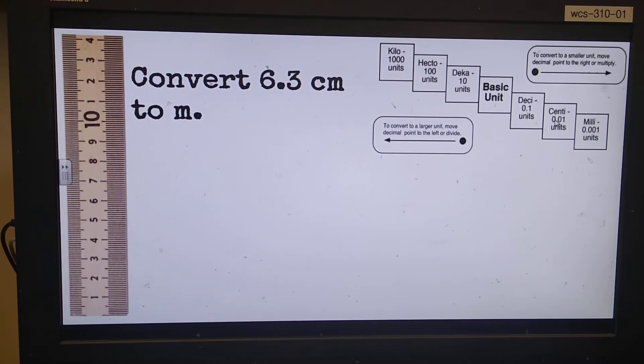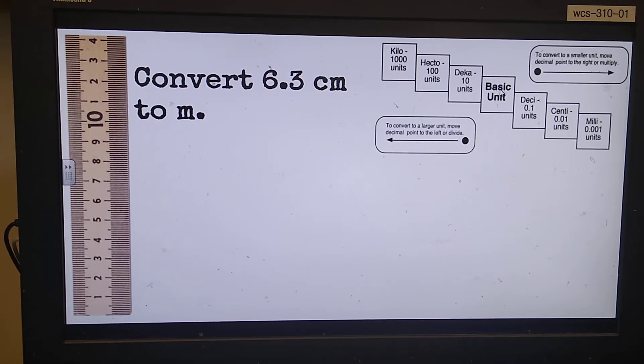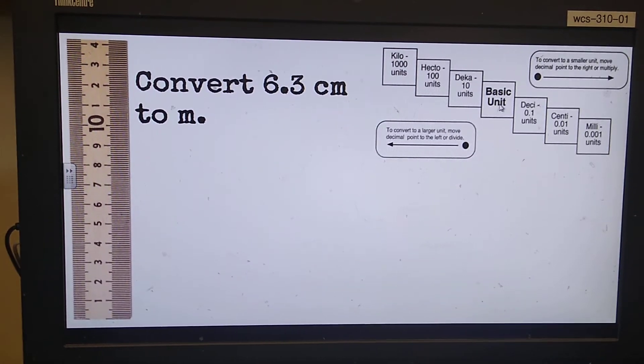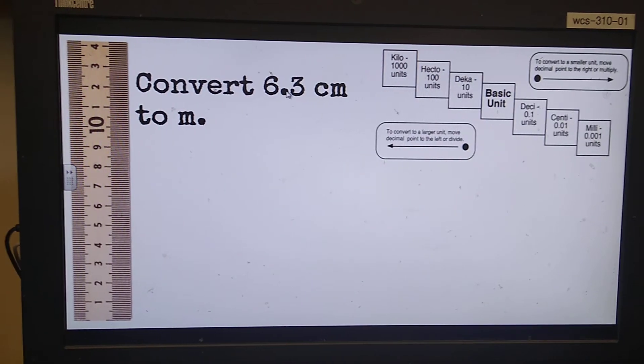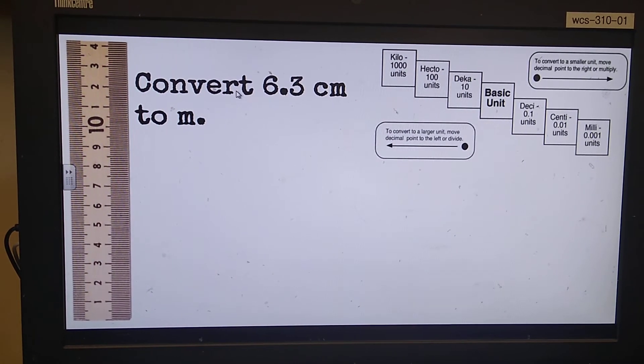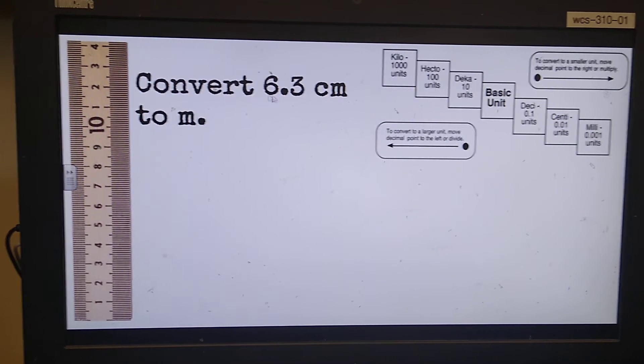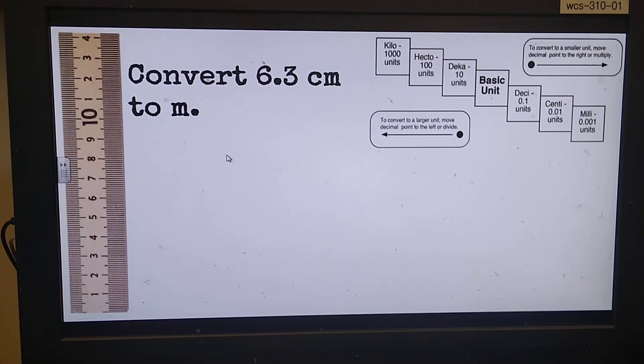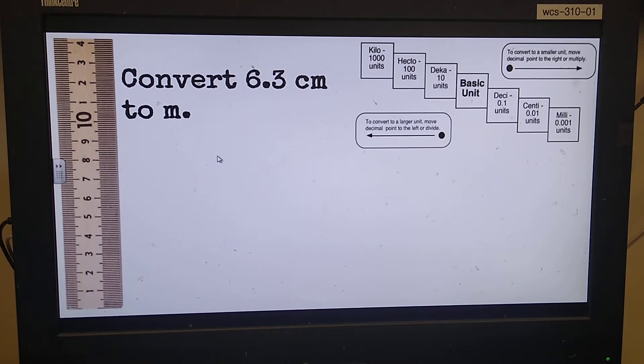Converting centimeters back to the base unit of a meter is one, two steps away, so we move our decimal point one, two spots. That would be 0.063 meters. Okay, that's the basic idea of conversion.